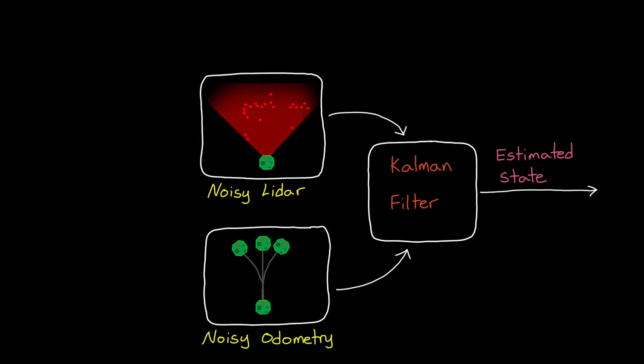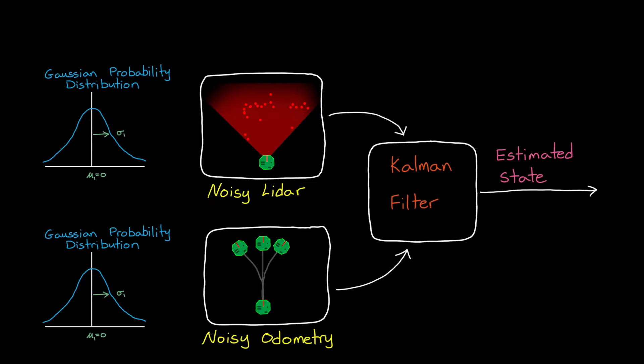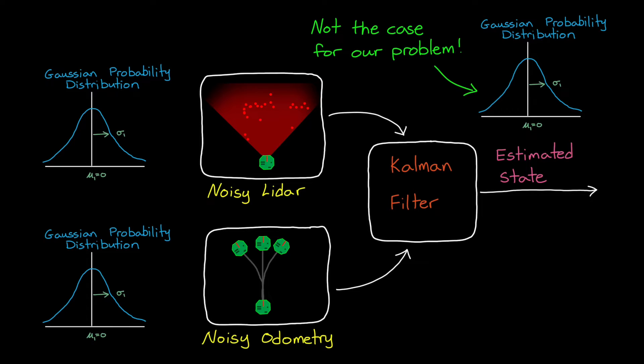One drawback of a Kalman filter that's going to be important for us is that it expects probability distributions to be Gaussian. So for our problem, the random dead reckoning noise needs to be Gaussian, and the LiDAR measurement noise needs to be Gaussian, which both might actually be, or at least close enough to still use a Kalman filter. But importantly, the probability distribution of the estimated state of the robot must also be Gaussian, which we'll see in just a bit is definitely not the case for our localization example. Therefore, we need an estimation filter that can handle non-Gaussian probability distributions, and that's where the particle filter comes in.